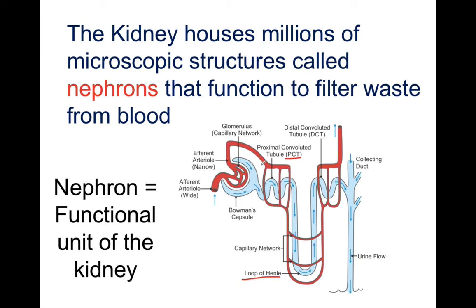The efferent arteriole takes substances over to the second capillary bed that courses around the nephron. A major difference between the afferent and efferent arterioles is that the diameter of the afferent arteriole is larger than that of the efferent arteriole. We saw a similar concept in the lymphatic system, where there were more afferent vessels than efferent vessels to slow lymph flow. The same idea applies here. The afferent arteriole is larger, bringing more blood into the glomerulus. Since the efferent arteriole is more narrow, it's unable to allow substances to leave the glomerulus as quickly, slowing blood flow through the glomerulus and ensuring that filtration takes place in this capillary bed.